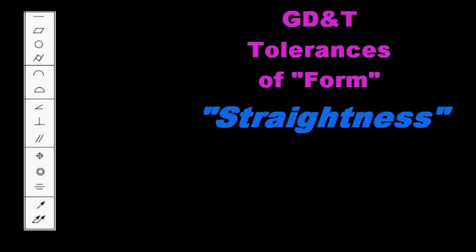The feedback is that our next group of videos should be focused on geometric dimensioning and tolerancing, followed perhaps by an introduction to screw threads and fasteners. If you have already viewed the intro to GD&T video, you should be familiar with these GD&T symbols. The first group of videos will focus on tolerances of form, and today we are going to focus specifically on straightness.